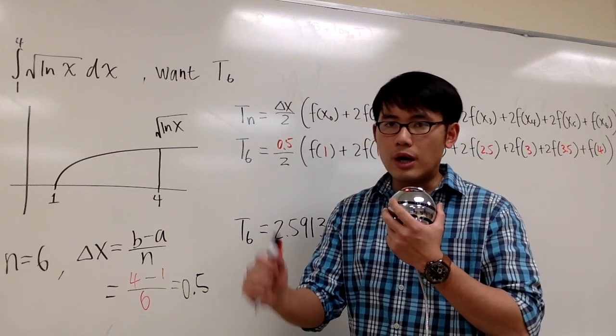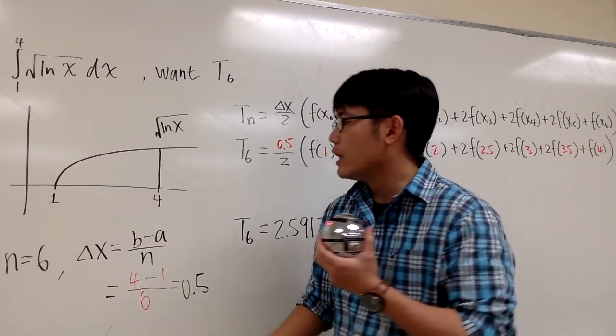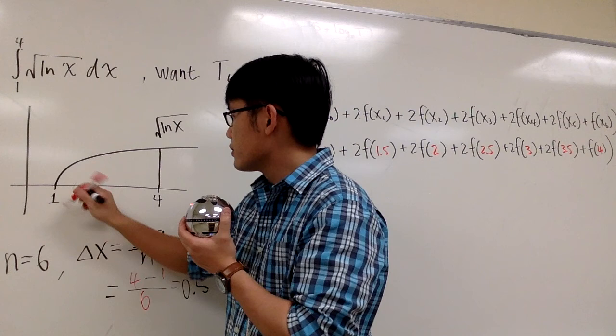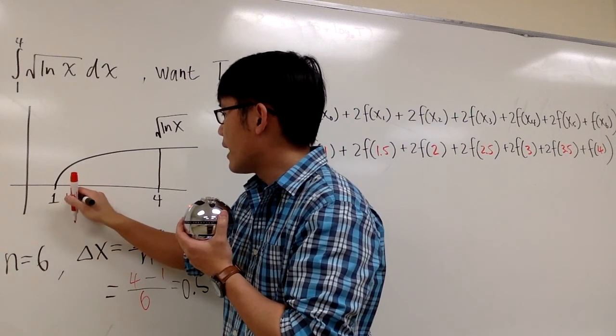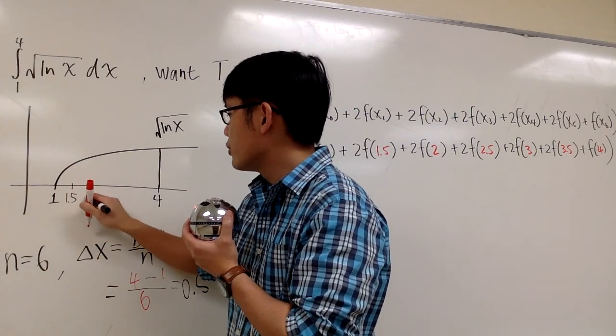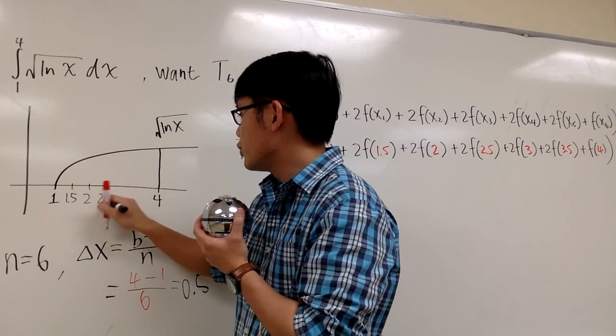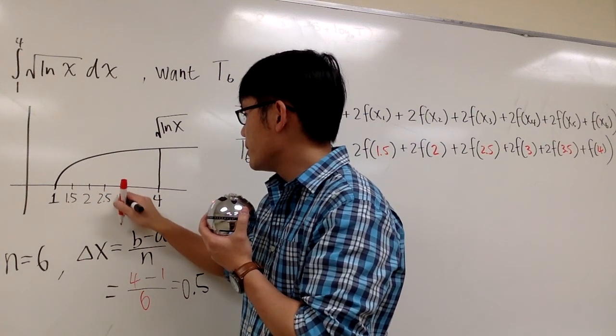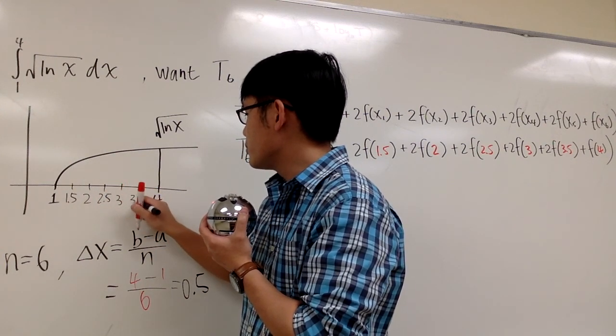So that means every time I have to go up by 0.5. We started at 1, so the next one will be 1.5, the next one is going to be 2, and the next one is going to be 2.5, and the next one is going to be 3, and the next one is going to be 3.5.